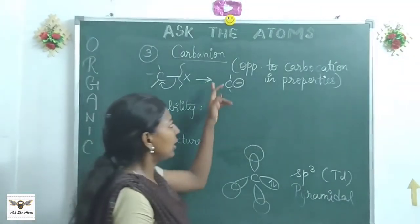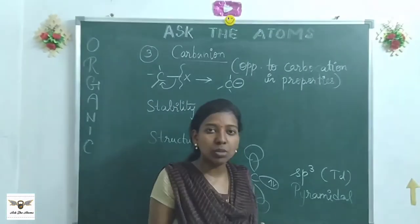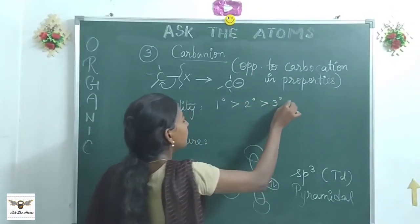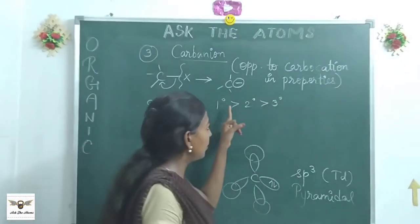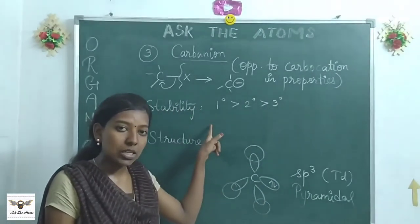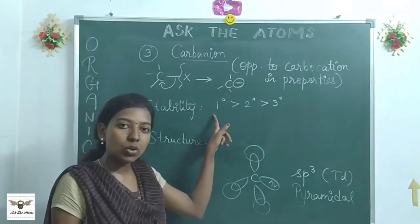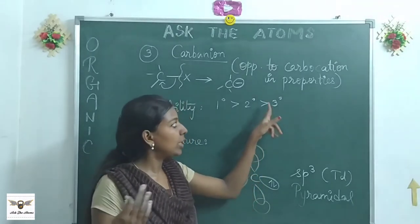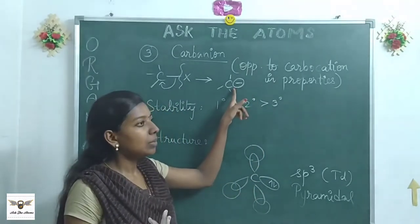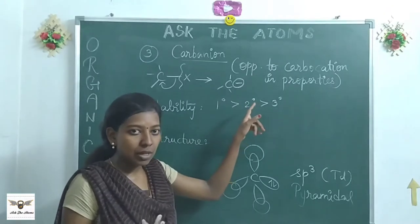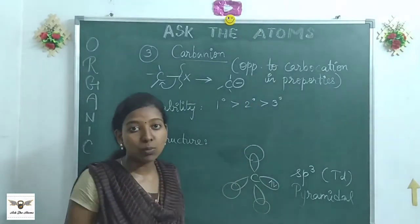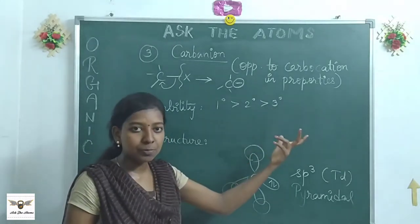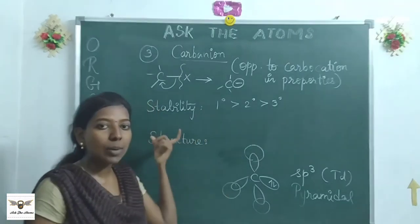The stability of carbanions is opposite to that of carbocations. The stability order is: primary > secondary > tertiary. The reason is that in tertiary carbanions, three alkyl groups are attached to the negative center. Alkyl groups have a +I effect, which would push more electron density onto the already negative carbon, making it more unstable. So more alkyl groups make a carbanion less stable — the stability order is reversed compared to carbocations.